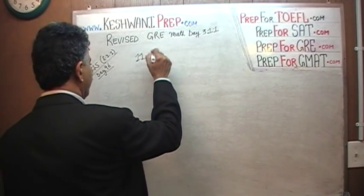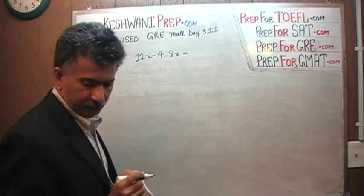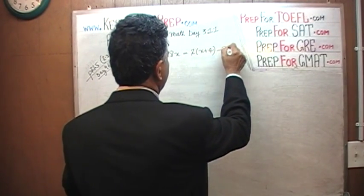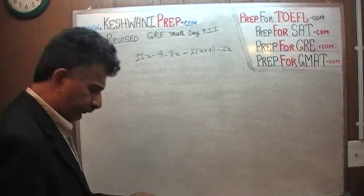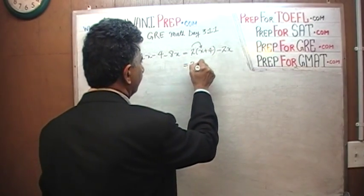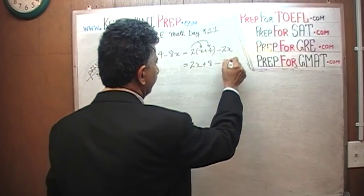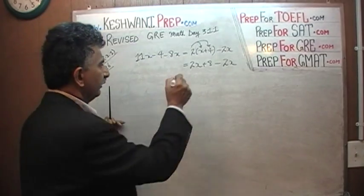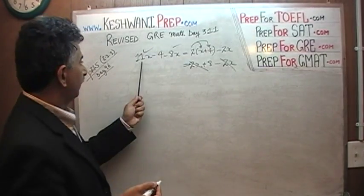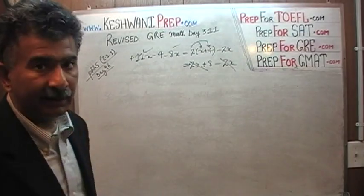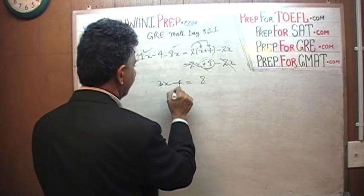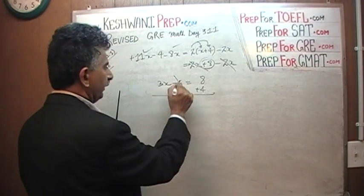11x minus 4 minus 8x, we are told, equals 2 times x plus 4 minus 2x. The very first thing we need to do is open the parenthesis. 2 times x is 2x and 2 times 4 is 8, and then minus 2x. That makes our life simple — we got a positive 2x and a negative 2x. This positive 2x and negative 2x drop out. Let's add 4 to both sides — that takes care of this 4.